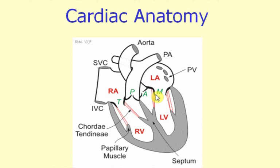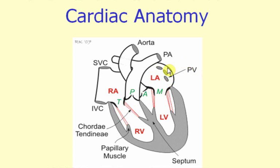There are also some large vessels that enter and leave the heart. On the right side of the heart, we have the superior vena cava and the inferior vena cava that enter into the right atrium. On the left side of the heart, on the left atrium, there are four pulmonary veins that enter into the left atrium to receive blood from the pulmonary system, from the lungs.